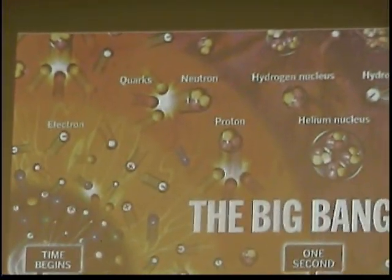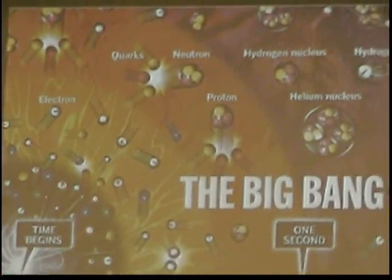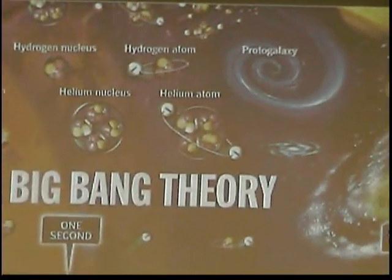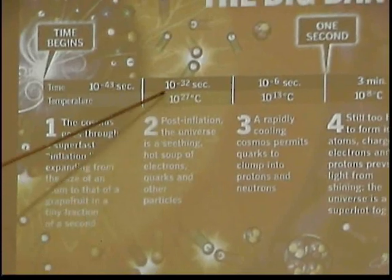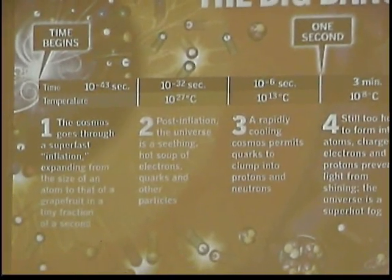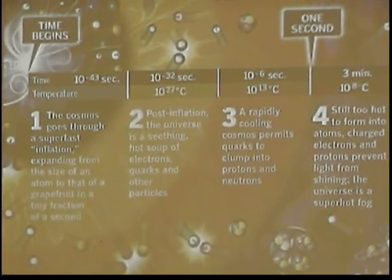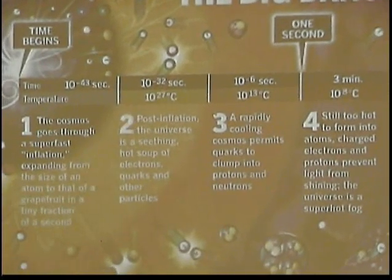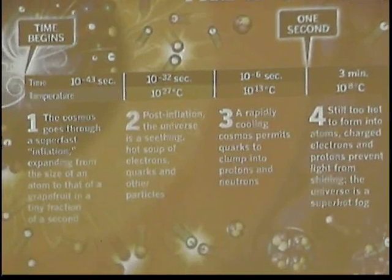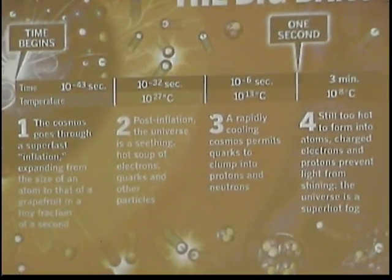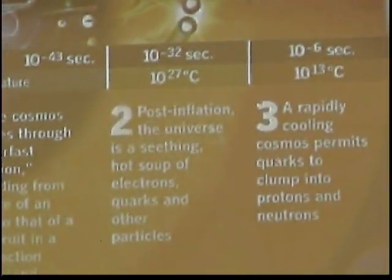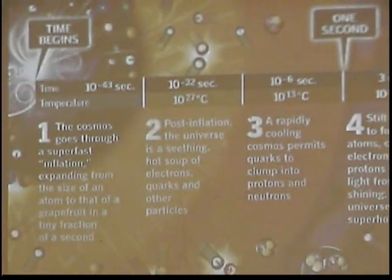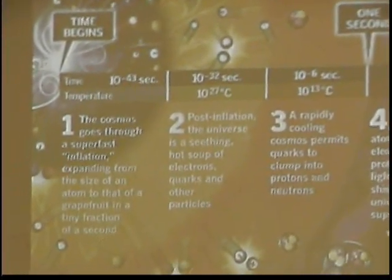Think about every type of particle that existed back then — all types of particles existed. Everything. It was so hot that everything existed; things that don't exist now probably existed then. At 10 to the minus 32 seconds, the universe was 10 to the 27 degrees Kelvin. All of the types of matter that can possibly exist were present. It's like being inside a particle accelerator all the time — the whole universe was a particle accelerator at that time.